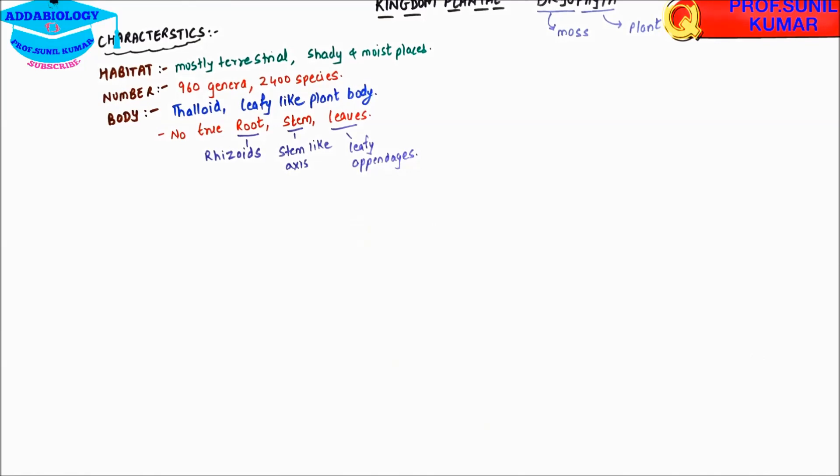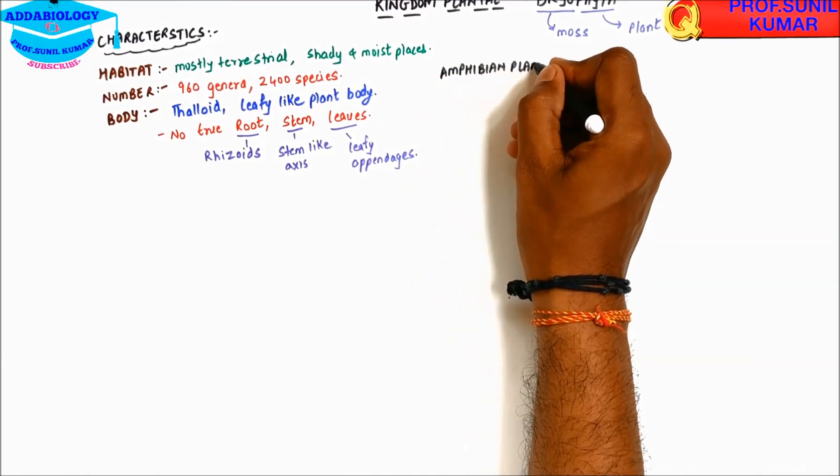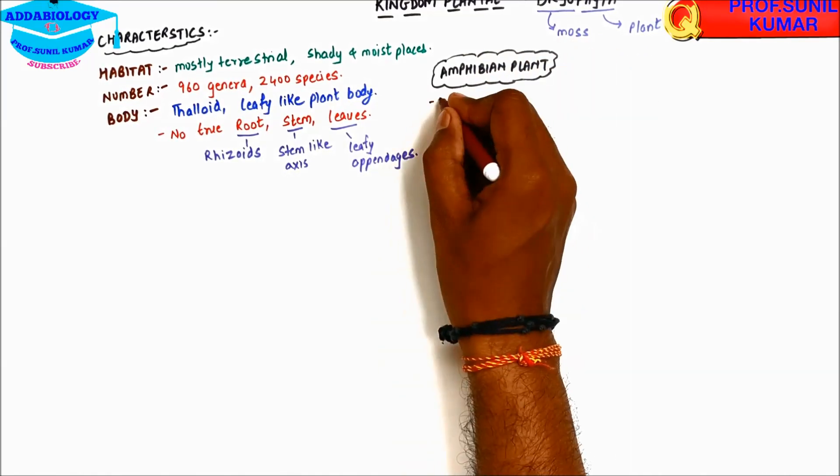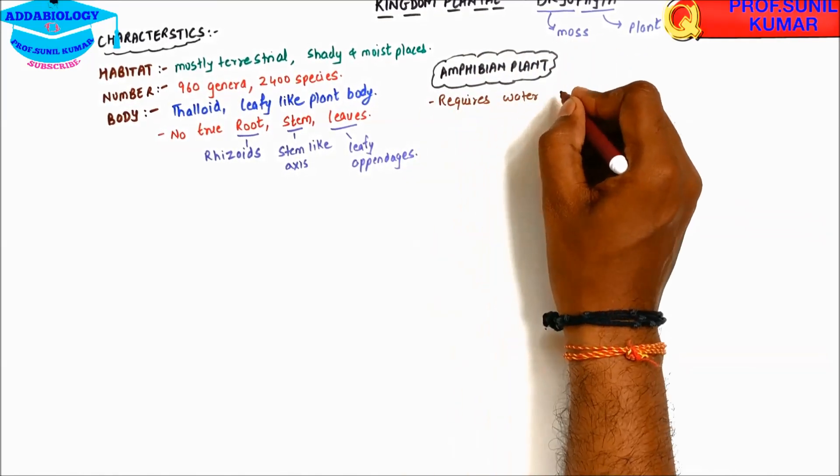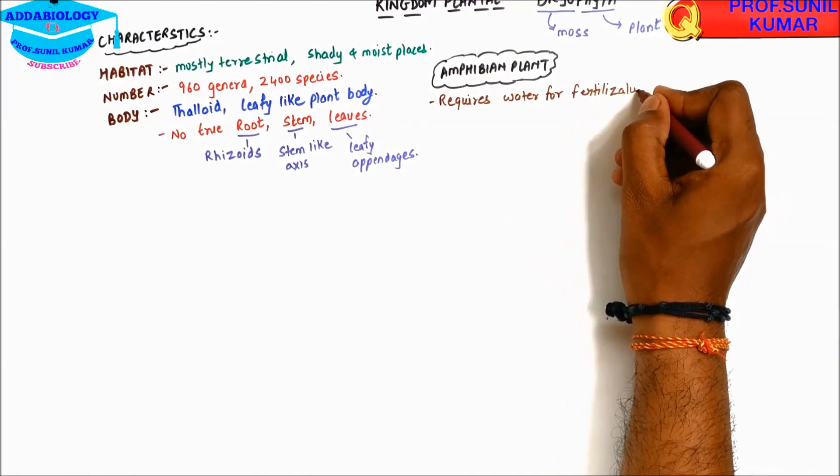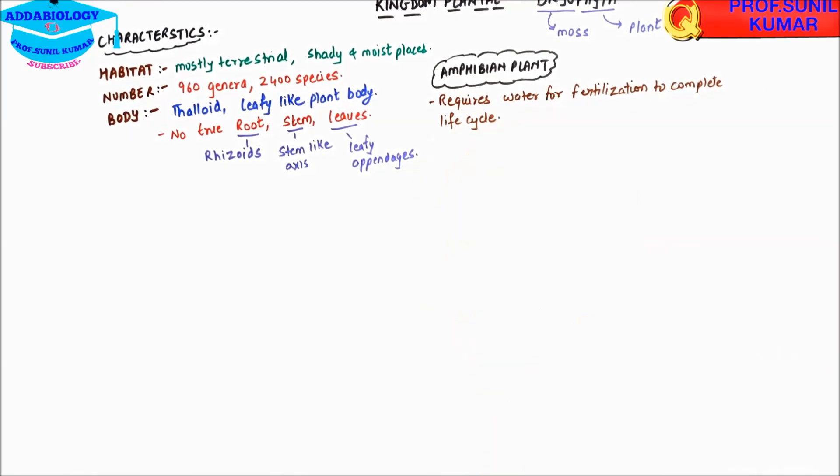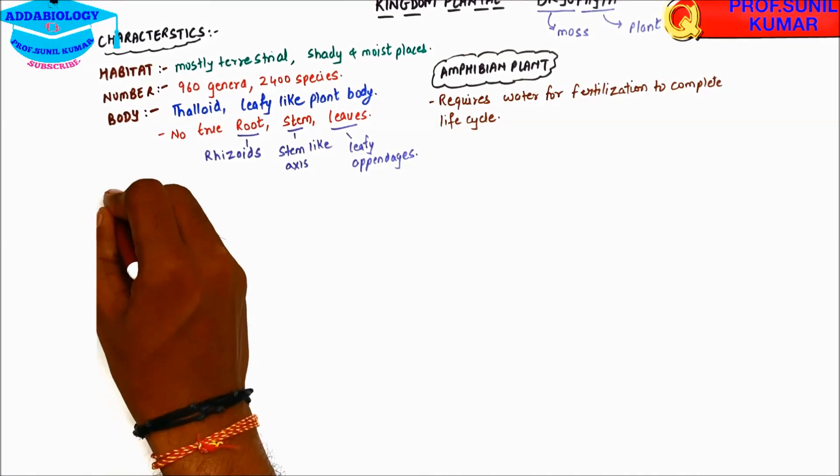Bryophytes are called amphibian plants. Why are they called amphibian plants? Because they require water for fertilization to complete their life cycle. Even one drop of water if required for fertilization, then those organisms are amphibians. So here the bryophyte is an amphibian plant.